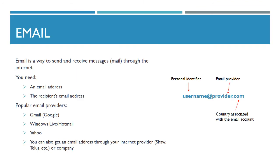Finally, we will talk a bit about email. Other than searching on the internet, using email is perhaps the most commonly used aspect of the internet. It is a way to instantly send and receive messages, known as mail, and most places, organizations, and people now have an email address that allows for communication. Of course, you do need to have an internet connection to send and receive email. If you use a phone or a tablet with a data plan, it is important to stay aware of your data use each month so you don't incur overcharges by using more data than you have been allotted.